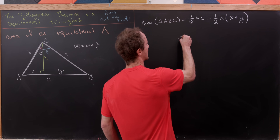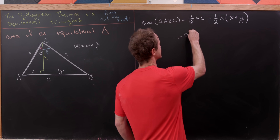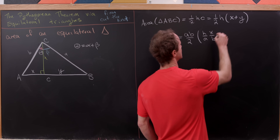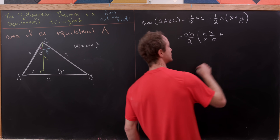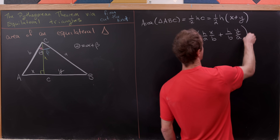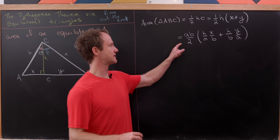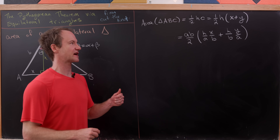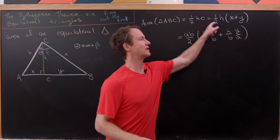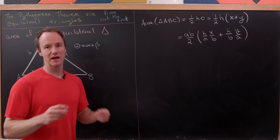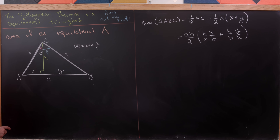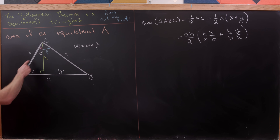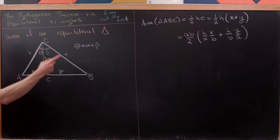Now I'm going to rewrite this as (a times b over two) times (h over a times x over b) plus (h over b times y over a). That might seem strange, but if you distribute the ab through, you cancel the denominators and recover hx plus hy. The reason we do this is that h over a is the cosine of beta, and x over b is the sine of alpha.